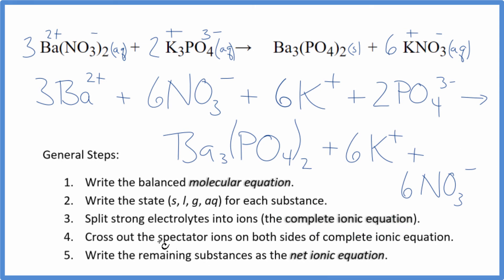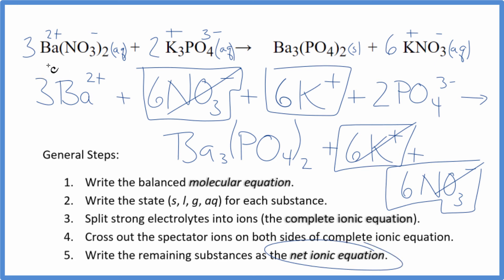Now we can cross out spectator ions. They're on both sides of the complete ionic equation. So in the reactants, I see I have these six nitrates here. I also have that in the products. So we get rid of that. Six potassium ions here. And in the products. Get rid of that. What's left, that's the net ionic equation for barium nitrate plus potassium phosphate. I'll clean it up and write the states. And we'll have our net ionic equation.